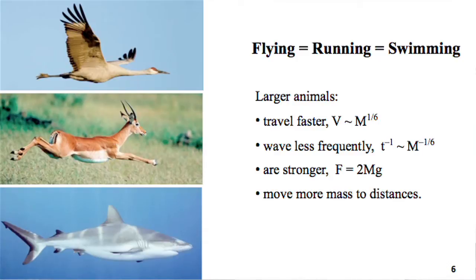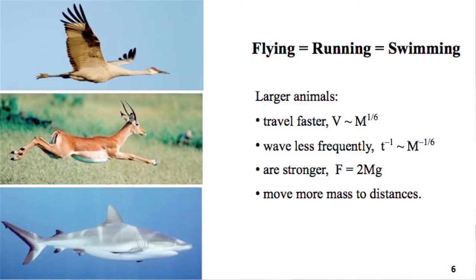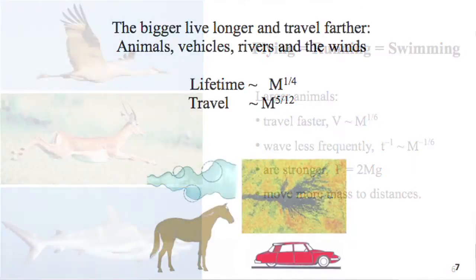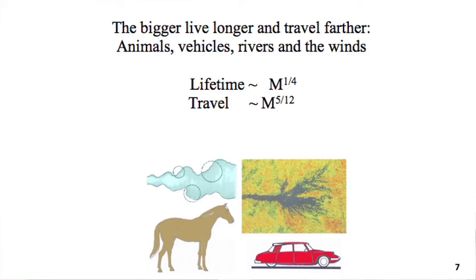We discovered that what holds for flyers actually holds just as famously for runners and swimmers. Swimmers were the oldest, runners are the second oldest, and flyers are just the novelty. The conclusion, which is easy to demonstrate, is that larger animals should travel faster, and should wave their bodies less frequently. Think of it — the elephant appears sluggish, low frequency, compared with the running mouse. The largest should be stronger and should move mass to greater distances. Pretty clear — meaning irrefutable.